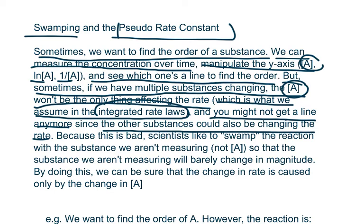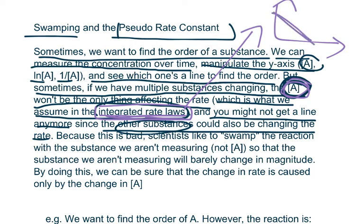Now that you introduce other substances that are changing and affecting the rate, A won't be the only substance changing the rate. And because our integrated rate laws only work when one thing, such as A, is changing, then if other substances are changing, these integrated rate laws fail. And since these integrated rate laws are the things that let us form the lines that we use, that means we can't use the integrated rate laws if we have more than one substance changing.